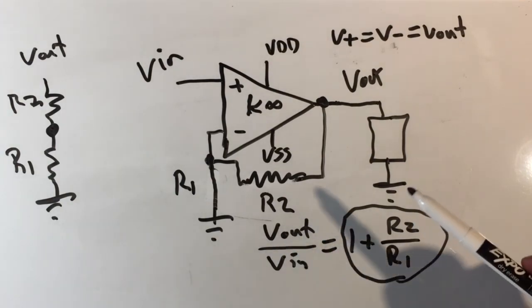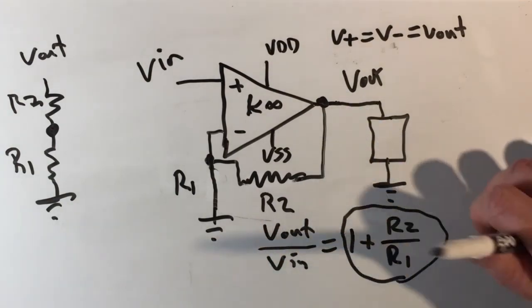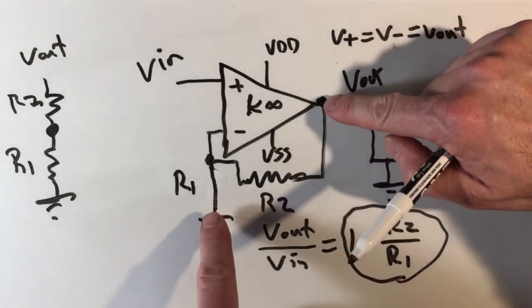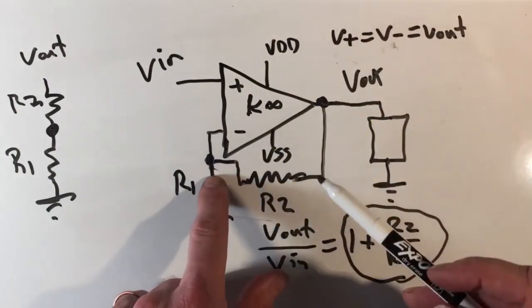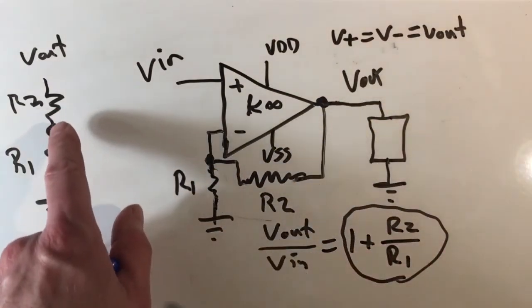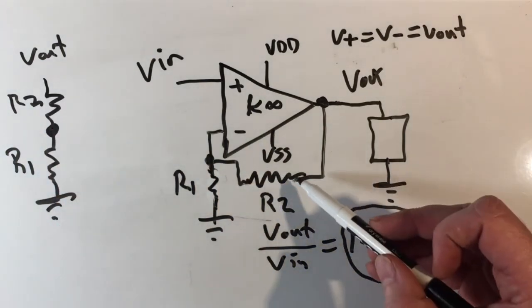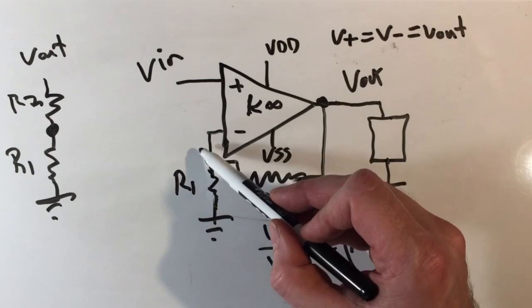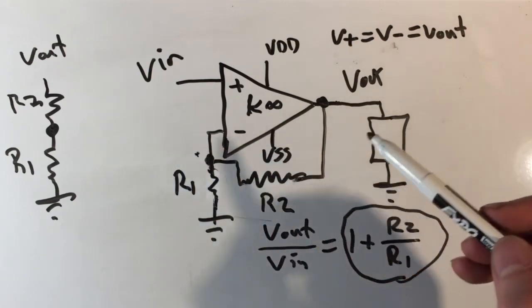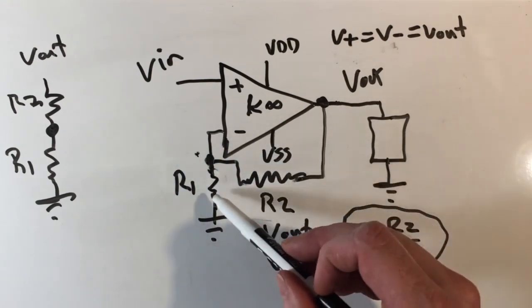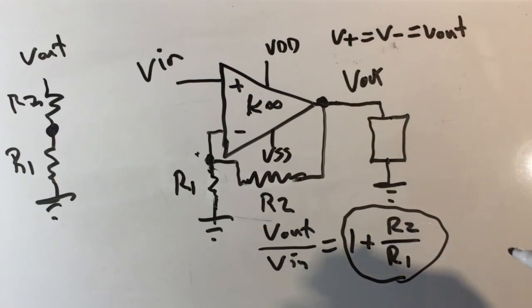The important take-home is to realize that this R1 and R2 circuit is really just a voltage divider. It says that the gain is going to go down the more voltage gets to this node. In other words, the smaller R2 is and the larger R1 is, the gain is going to go down.